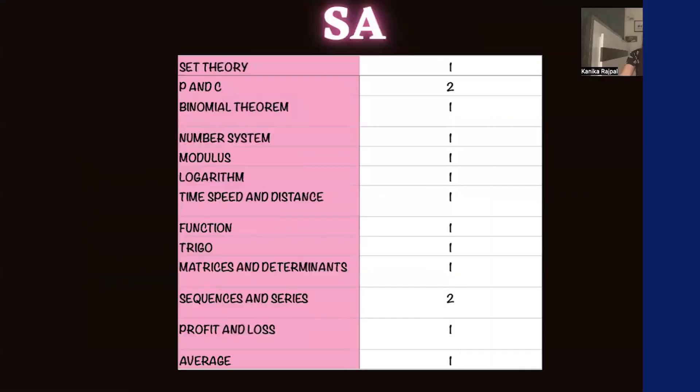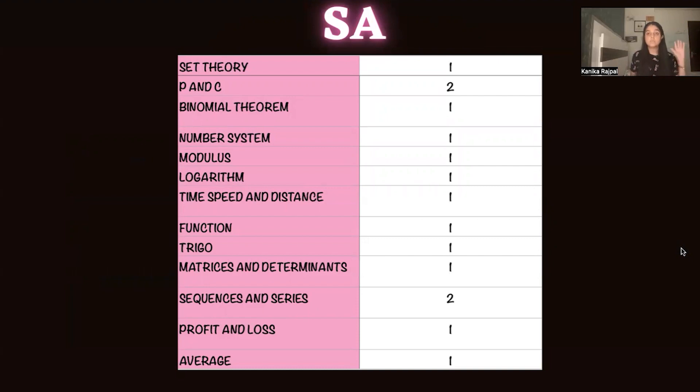Let's first talk about the first section, the short answer type question section. As you can see, this is the approximate division of chapters and questions. The major focus is on PNC and probability. The thing about this particular chapter is that IIT-JEE students or the ones who prepare, the science students, already have an edge here because they're already doing quite high-level questions of PNC and probability. If you're a non-math student, you should focus a lot more on PNC and probability. It's very consistently been seen that those two chapters come a lot more than any other chapter, and even sequences and series for that matter, especially for the first section.